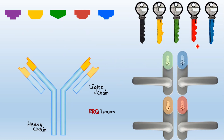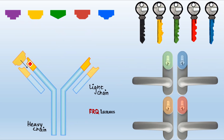If we compare antigens with keys, then antibodies can be compared with different kinds of locks — green, blue, red, and so on. The red key opens the red lock, the blue key opens the blue lock. Looking at different patterns, the yellow antigen is the most suited to fit this particular antibody, as its shape is compatible with the corresponding portion of the antibody.